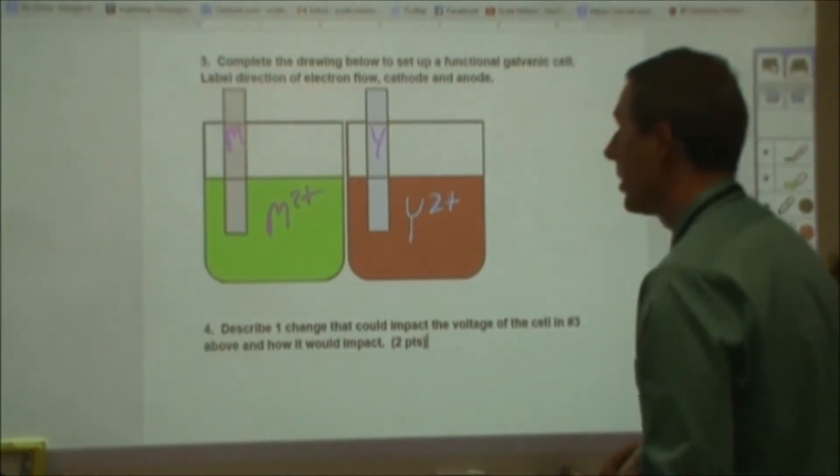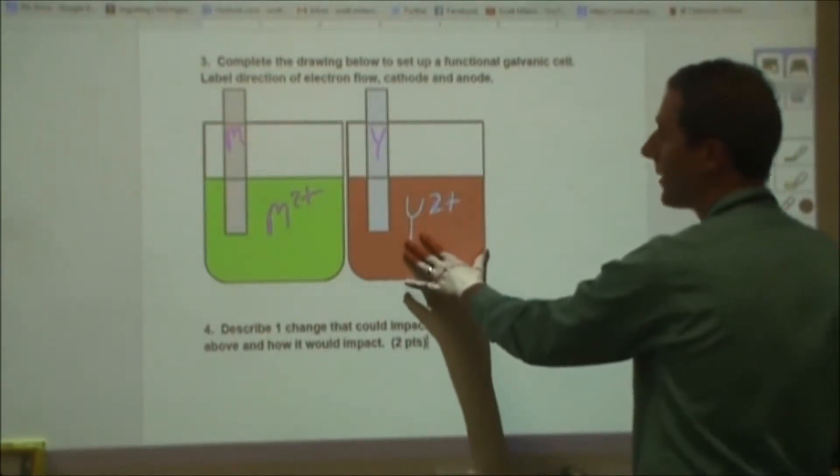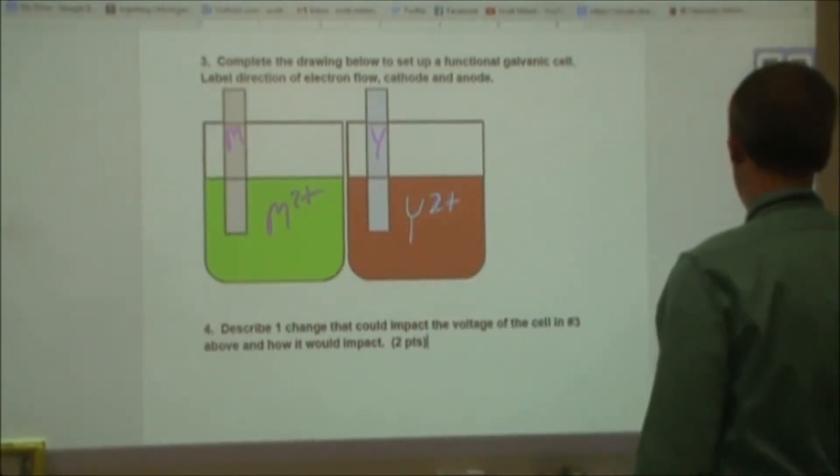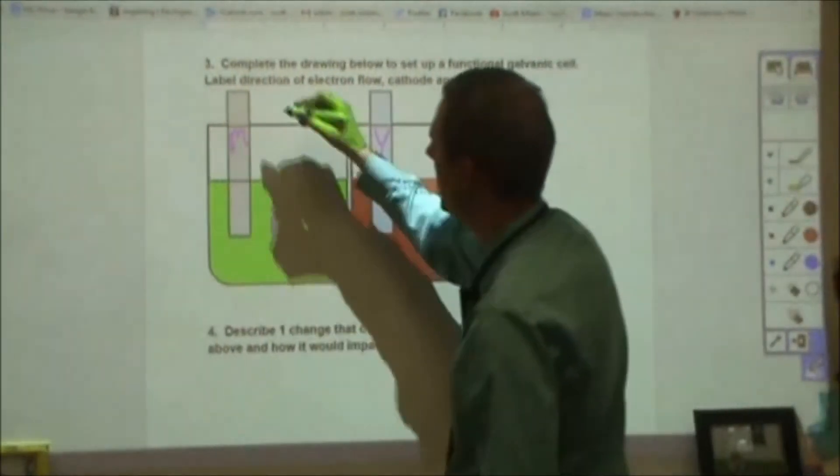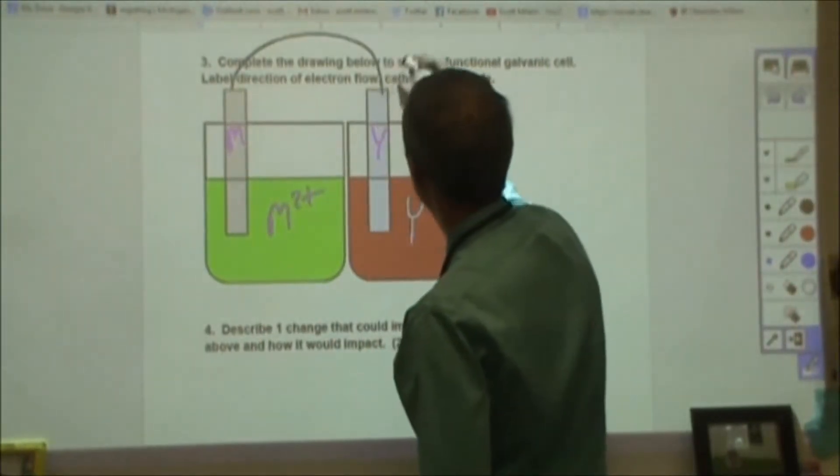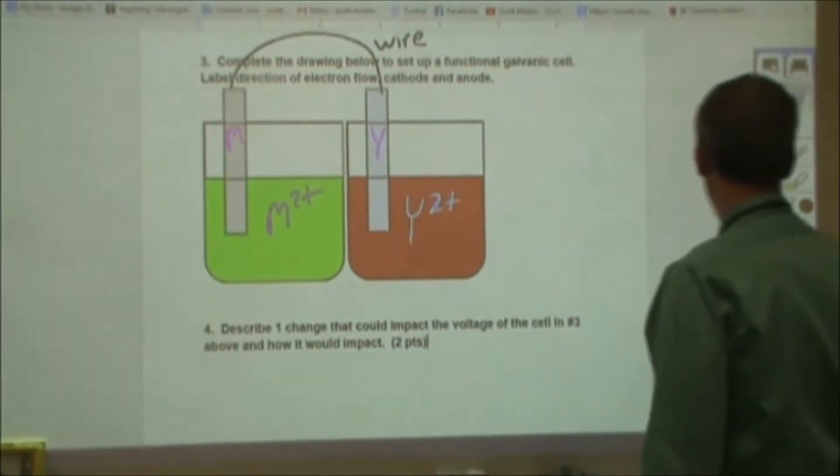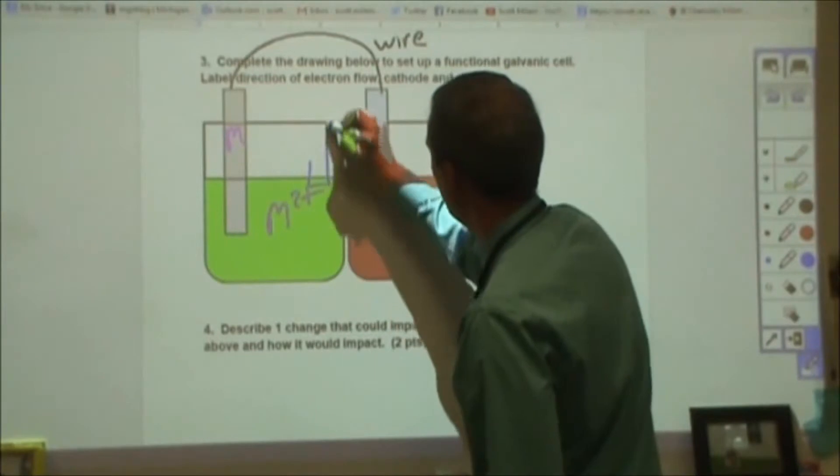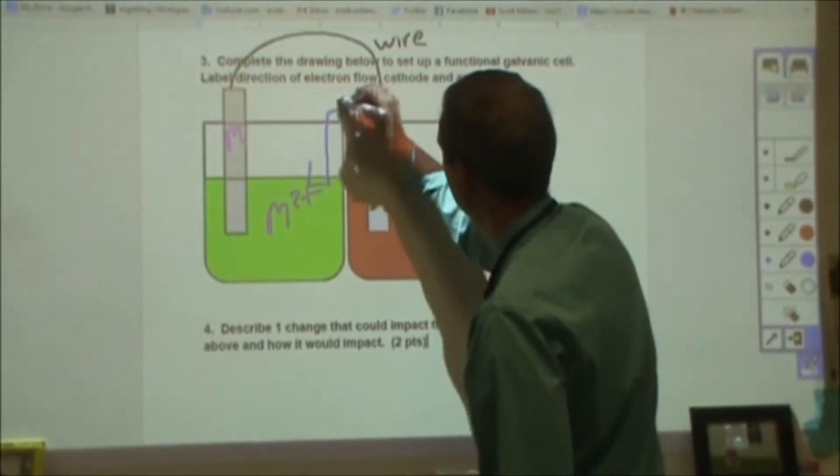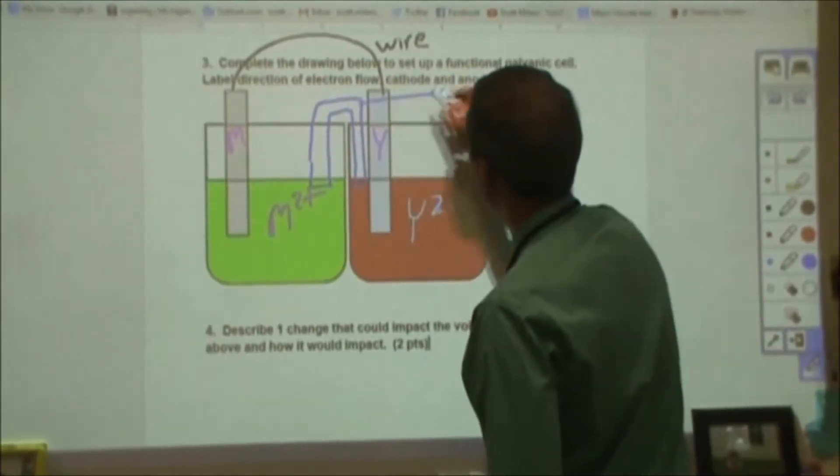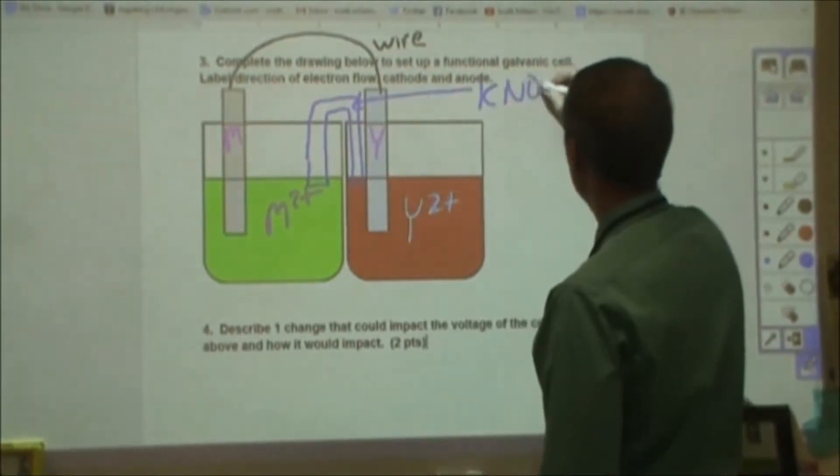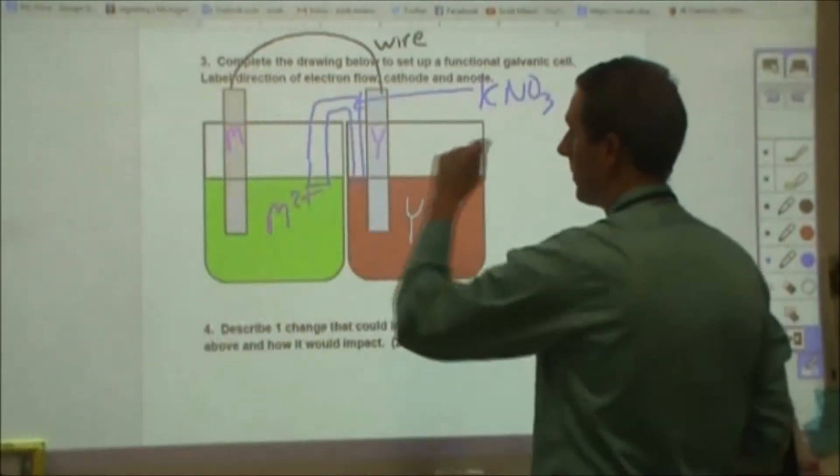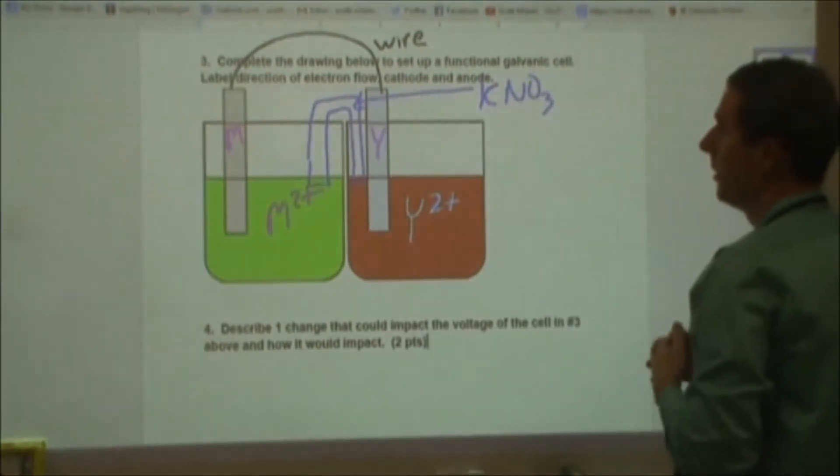So it says complete the drawing below to set up a functional galvanic cell. Label the direction of the electron flow cathode and anode. So the first thing we need to do is we need to connect these two things with a wire. Second thing we need to do is we're going to need a salt bridge. So salt bridge fit right here. So we're going to put some kind of slurry in here. I'm going to put potassium nitrate so that we can maintain our charge neutrality as we complete this circuit.